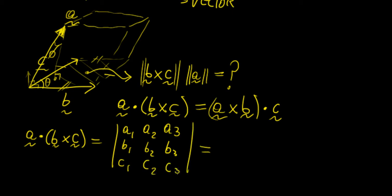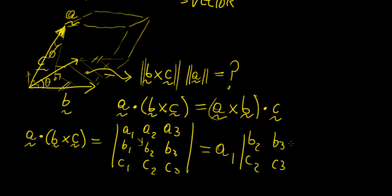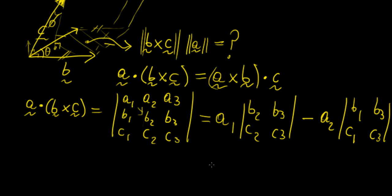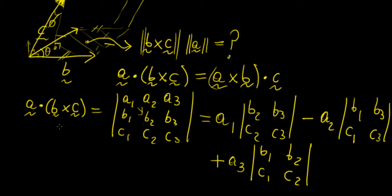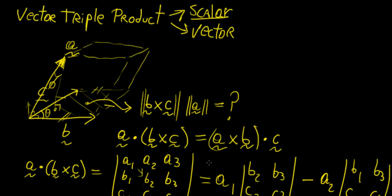To evaluate the 3×3 determinant, we cross multiply and take 2×2 determinants: a1 times the determinant of (b2, b3, c2, c3), minus a2 times the determinant of (b1, b3, c1, c3), plus a3 times the determinant of (b1, b2, c1, c2). That's the most direct method. This is probably one of the most interesting applications of vectors — combining a dot product with a cross product to get a volume.